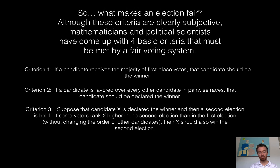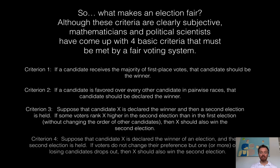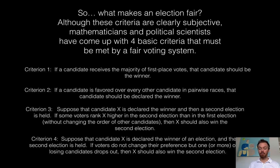The third criterion: suppose a candidate is declared the winner and then a second election is held. If people are ranking candidates and in the second election they rank the person who originally won even higher, then that person should still win. The fourth criterion: suppose a winner is declared and a second election is held, but one of the original losers drops out and nobody changes their preferences — then the person who originally won should again win.